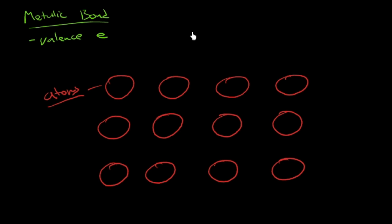And so one model, the model that we're looking at right now, which is not too shabby, or not too bad for explaining some behavior of metals, is that the valence electrons are contributed to a so-called sea of electrons.